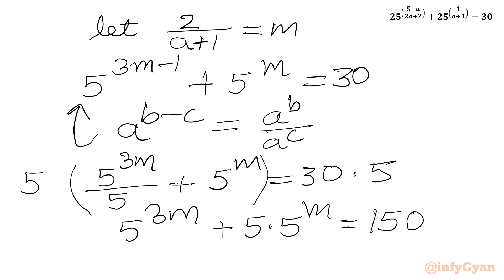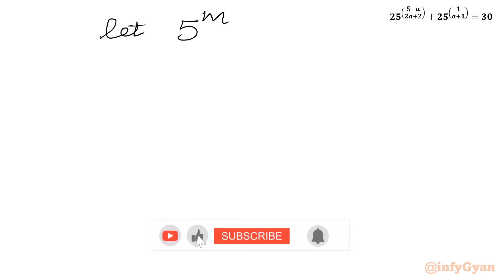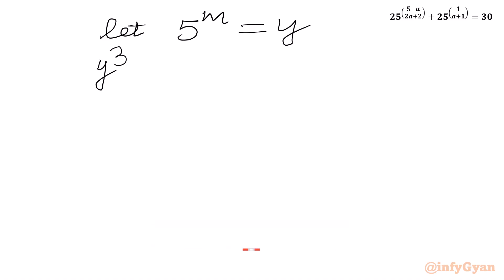Now using the exponent law, 5 to the power 3m can be written as (5 to the power m) cubed. Now we assume 5 to the power m equal to y. So our cubic equation becomes y cubed plus 5y equal to 150.